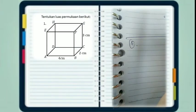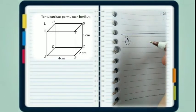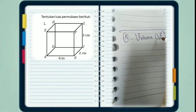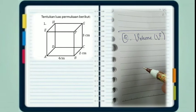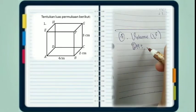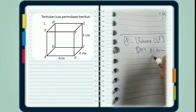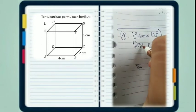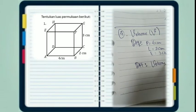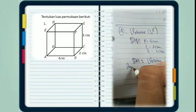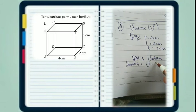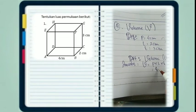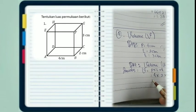Soal nomor 4 tentang bangun ruang: menentukan volume. Diketahui panjang = 4 cm, lebar = 2 cm, dan tinggi = 3 cm. Yang ditanya adalah volume. Rumus volume = panjang × lebar × tinggi. Substitusikan: 4 × 2 × 3 = 24 cm³.